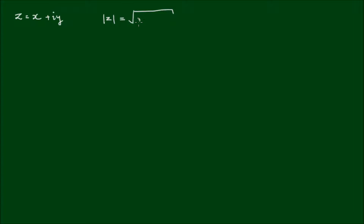An arbitrary complex number can be expressed as z = x + iy. The magnitude of that complex number, or its distance from the origin, is equal to the square root of x squared plus y squared. More generally, it is the square root of the real component of z squared plus the imaginary component of z squared.